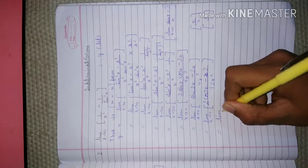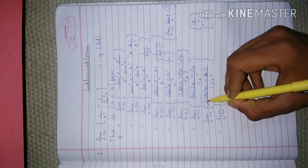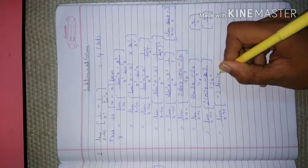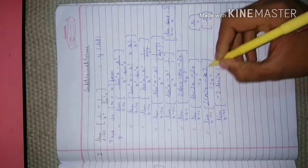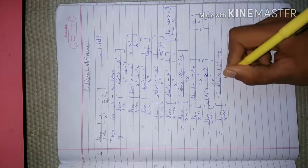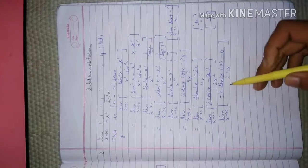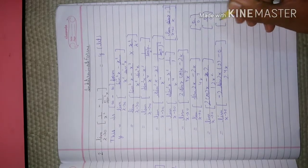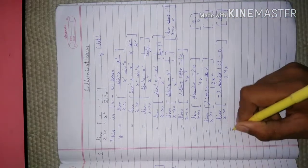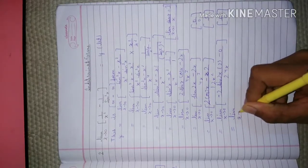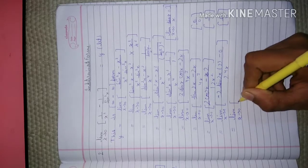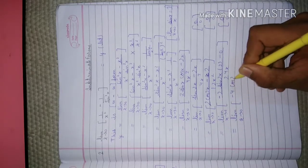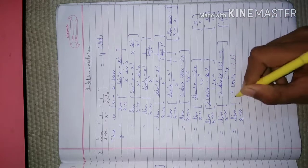Applying the L'Hôpital rule again: differentiating with respect to x. The derivative of 2cos(2x) gives minus 2 sin(2x) times 2, which is minus 4 sin(2x), upon 24x. When we put x equals to 0, sin(0) equals 0, so the numerator becomes 0 and denominator also becomes 0. Therefore, applying the L'Hôpital rule once more. The derivative of sin(2x) is cos(2x) times 2, giving minus 4 times 2 cos(2x) upon 24.